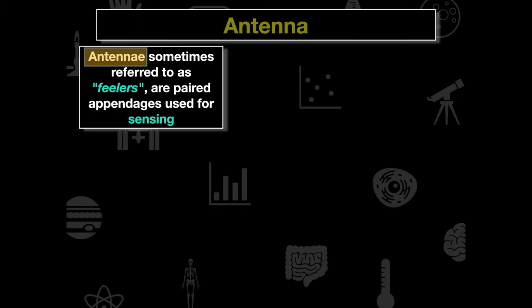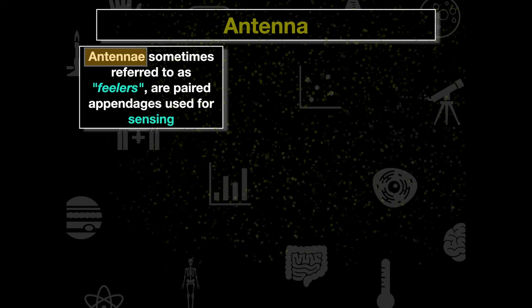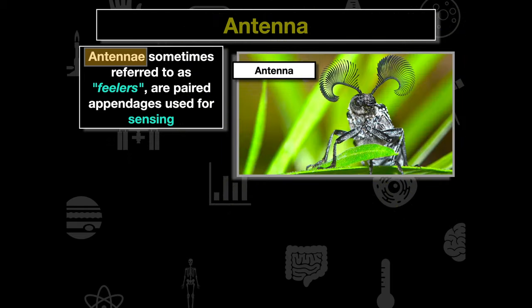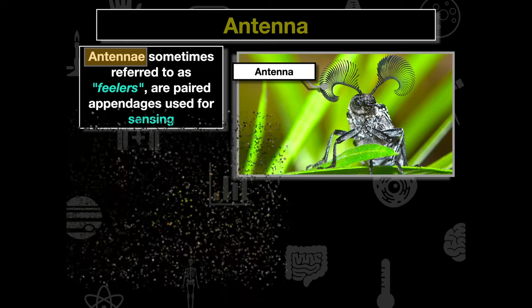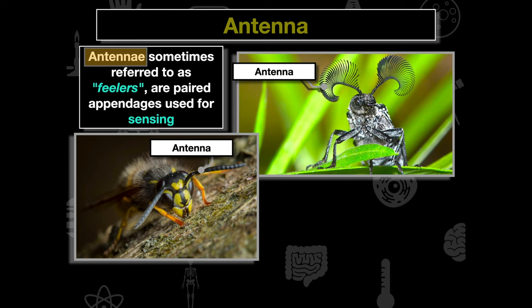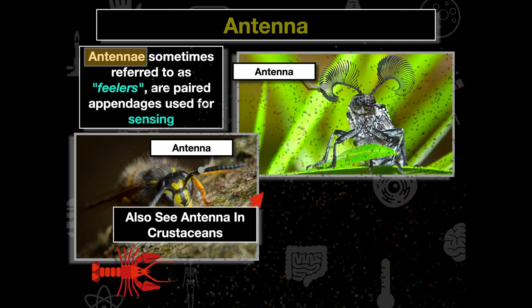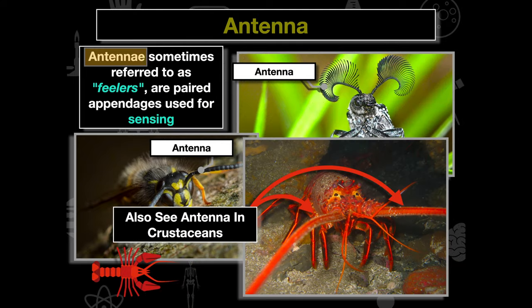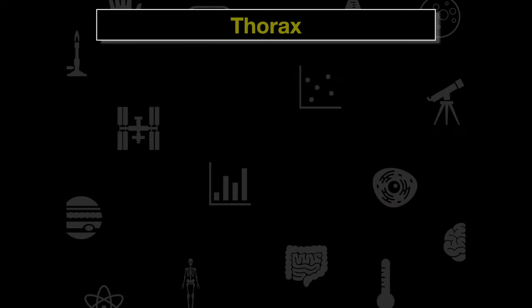Another structure found on insects is antennae, sometimes called feelers — pairs of appendages used for sensing. We can see very intricate antennae on various insects, including honeybees. Crustaceans also have antennae because they are related to insects and close on the phylogenetic tree. Antennae allow insects to feel around their environment; they are very sensitive organs that generate data about the surroundings. For bees, antennae help locate the center of a flower where pollen and nectar are found.